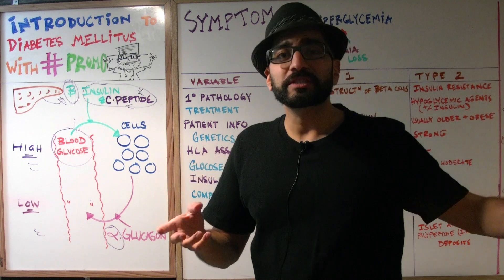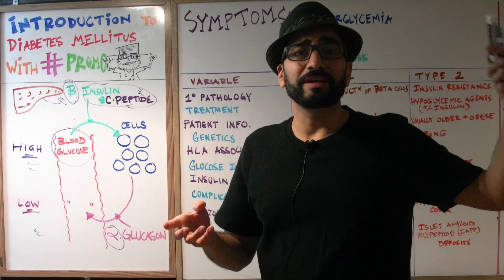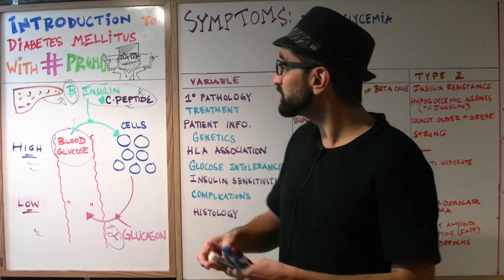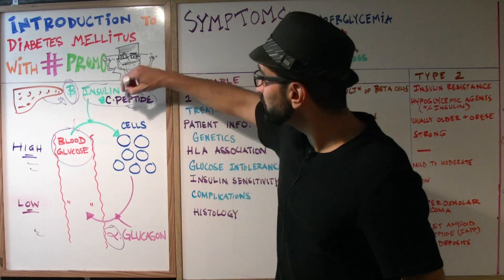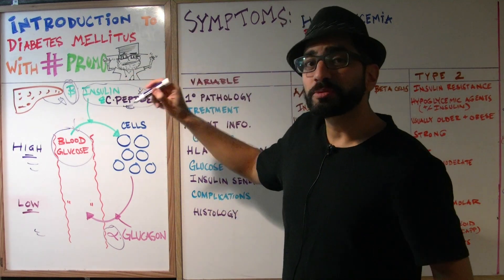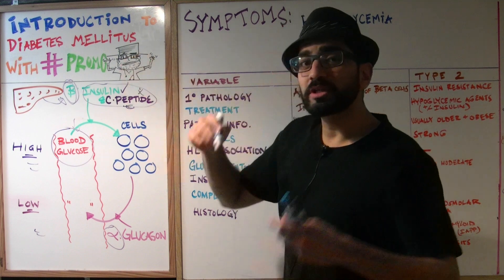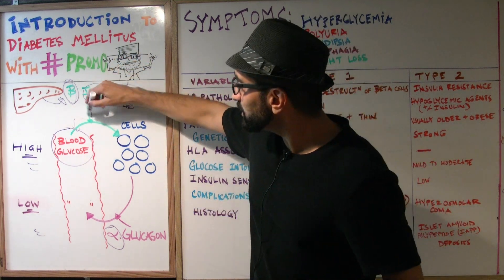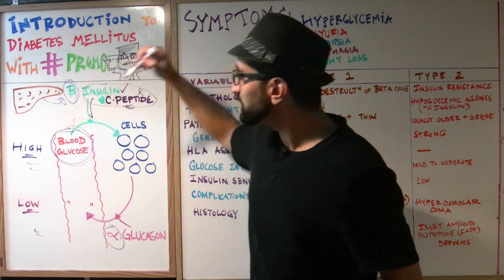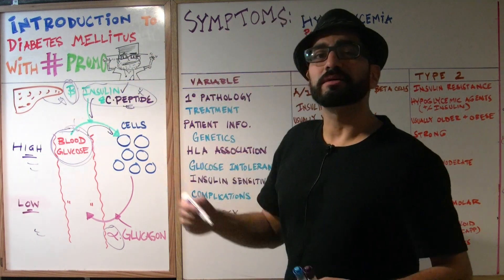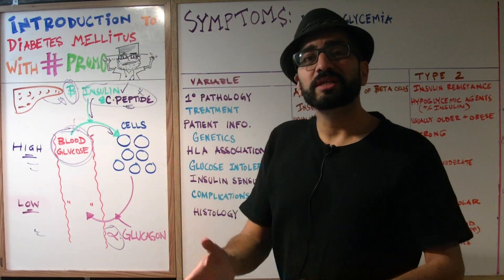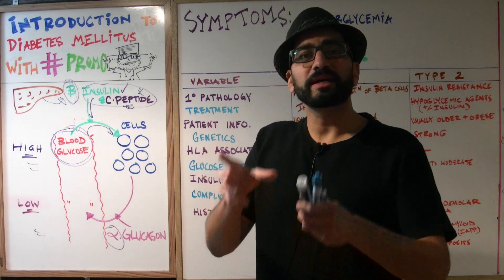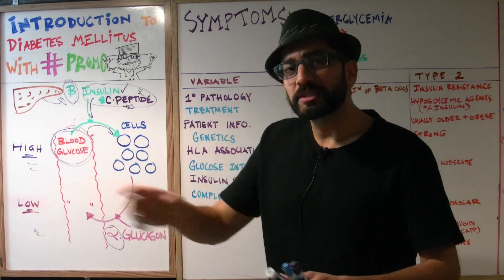We talked about this in a previous video — endocrine video number 19, when we discussed insulinomas and glucagonomas. It's very important to remember that c-peptide is also produced when insulin is produced by the body. Now that the insulin is out, what does it do? It takes the blood glucose levels and puts them into the cells. The purpose of insulin is to take blood glucose and lower it by providing that glucose to the appropriate cells.